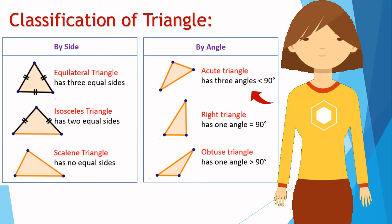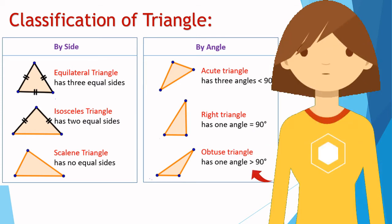All the angles of an acute triangle are less than 90 degrees. If one angle is equal to 90 degrees then it is called a right triangle. And if one angle is greater than 90 degrees then it is called an obtuse triangle.